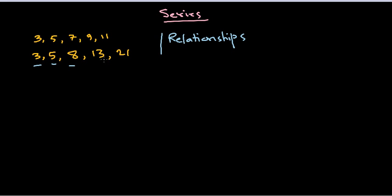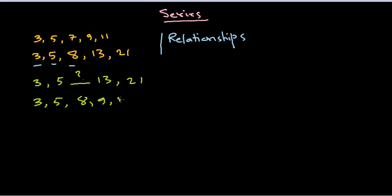Problems regarding series can come in two ways. One type: they give you 3, 5, _, 13, 21 and ask you to find the missing value — we know it's 8. The other type: they give you a series and ask you to take the odd one out. In that case, 8 would be the odd one out. These are the types of questions you'll get from series problems.